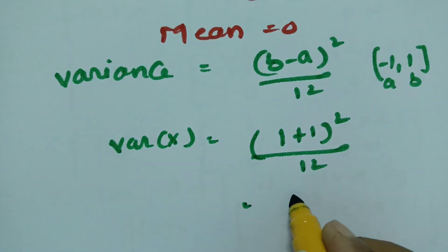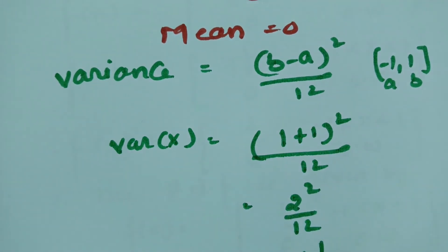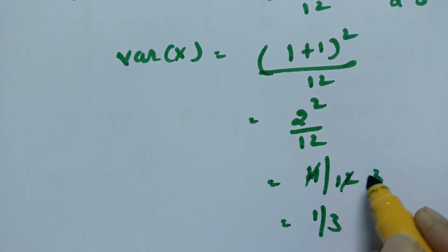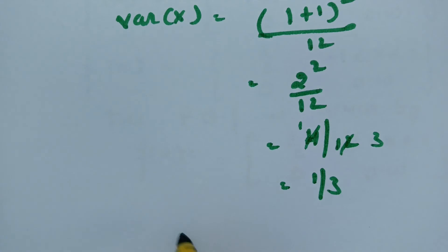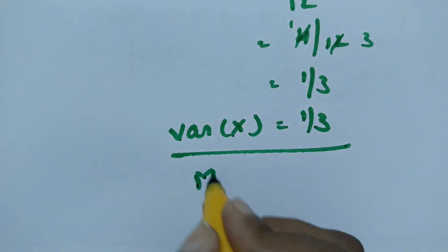This is equal to 2 squared by 12, which equals 4 by 12, and therefore the value is 1 by 3. Cancelling, 4 by 12 simplifies to 1 by 3. Therefore we got the variance of the uniform distribution as 1 by 3 and the mean as 0.